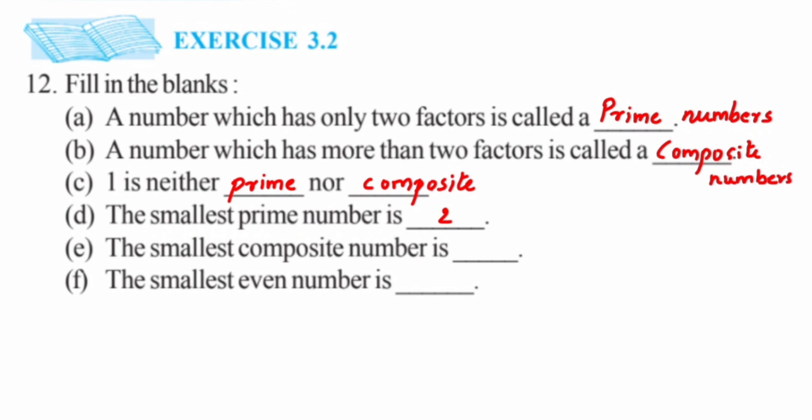Question (f), the last one: smallest even number. The smallest even number is again 2. So 2 is an even number and also a prime number. We can say that 2 is an even prime number, which is the only even prime number that exists.